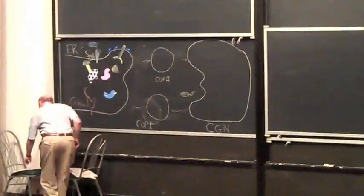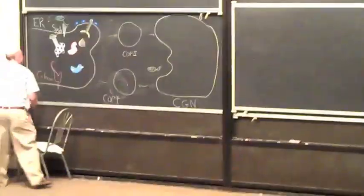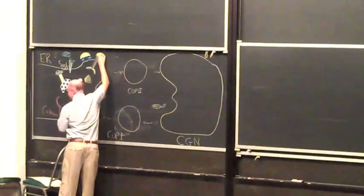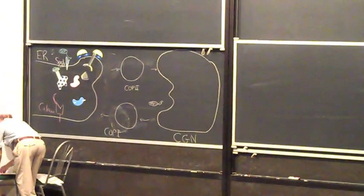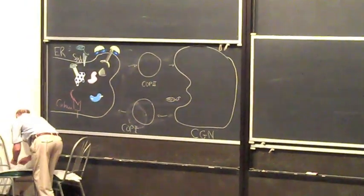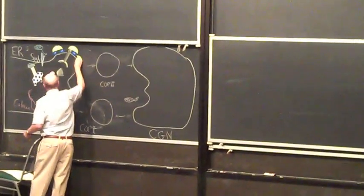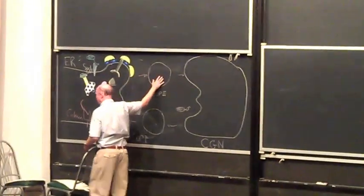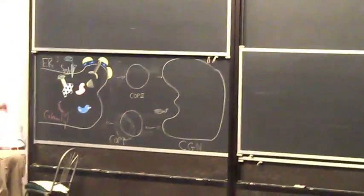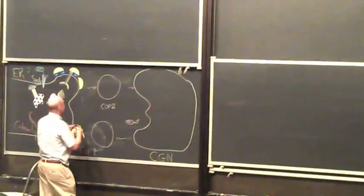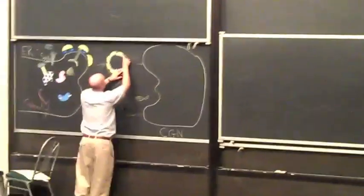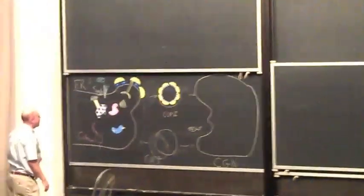It recruits the coat proteins, those COPII proteins that we showed earlier. Once the coat proteins are recruited, the whole thing evaginates. Eventually it pinches off and forms a vesicle — a coatomer-coated vesicle. And then that vesicle will go to the cis-Golgi network. We'll talk about that in a minute.